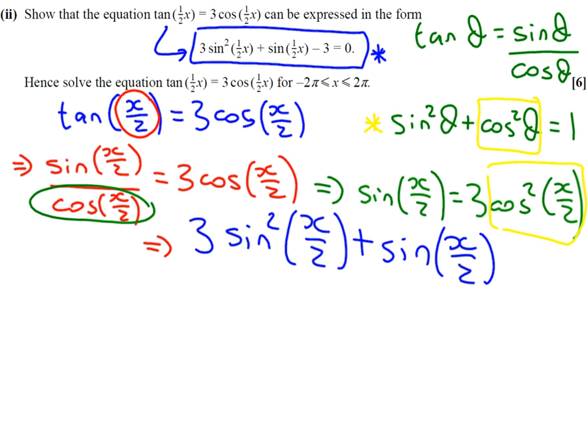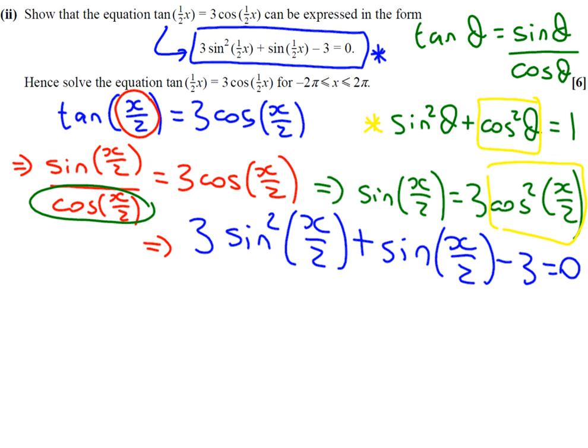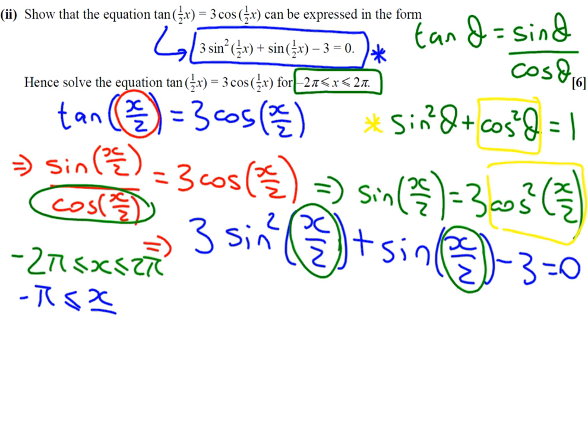So now it says, hence, solve the equation tan of a half x equals 3 cos of a half x. So if you think back to a graph we drew, we are finding these two x values. Because it says solve for x. Now, if you look at our range, we have that x is between minus 2 pi and 2 pi. Now, the angle that I want us to be thinking about is x over 2. So we're going to transform our limits. So if x is between minus 2 pi and 2 pi, if we divide that equation by 2 or that inequality by 2, we get the condition that x over 2 is greater than or equal to minus pi and less than or equal to pi.